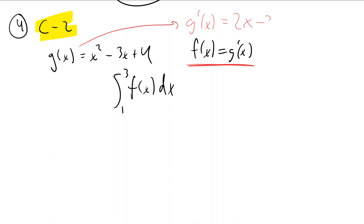If you're not sure, then that might be the quickest. And then instead of saying f, we can put in the derivative of g, which is 2x minus 3.